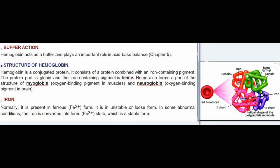Buffer action: hemoglobin acts as a buffer and plays an important role in acid-base balance. Structure of hemoglobin: hemoglobin is a conjugated protein consisting of a protein combined with an iron-containing pigment.